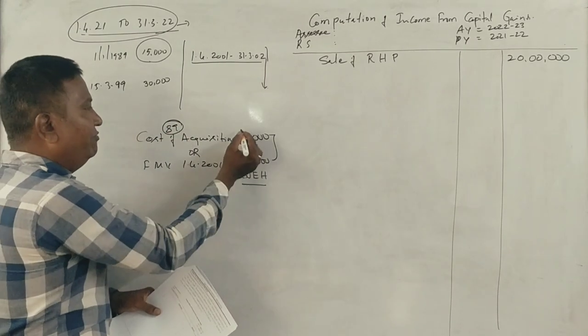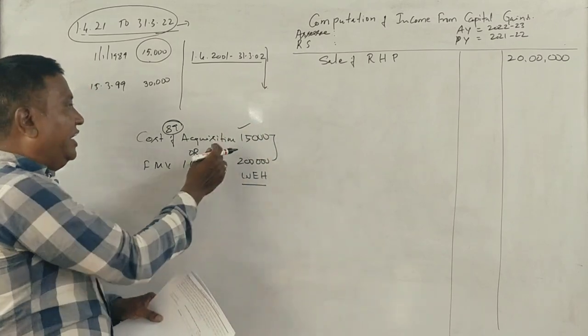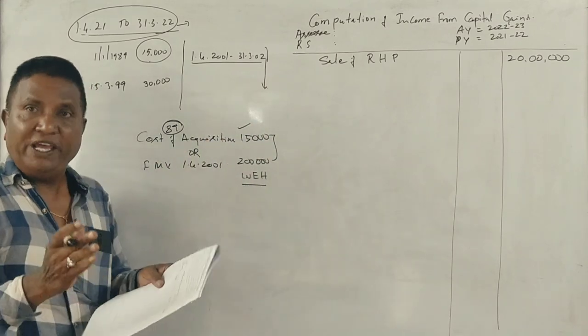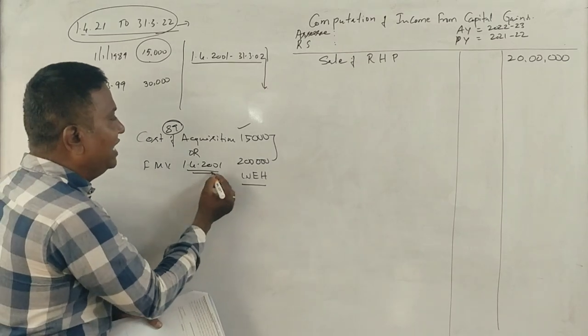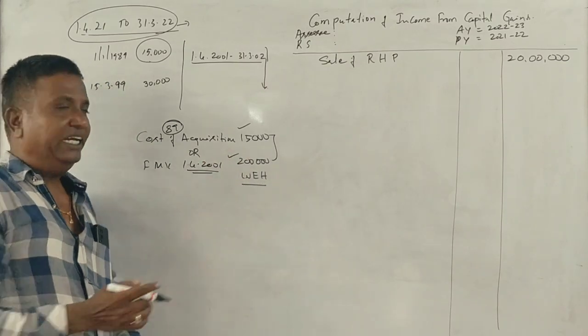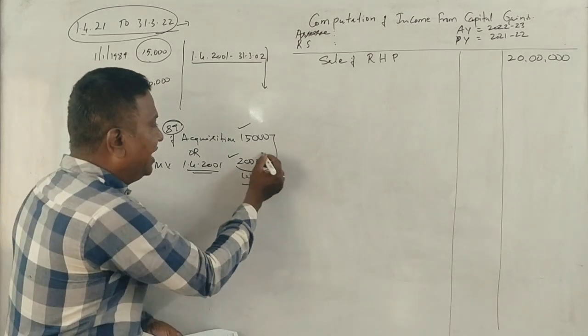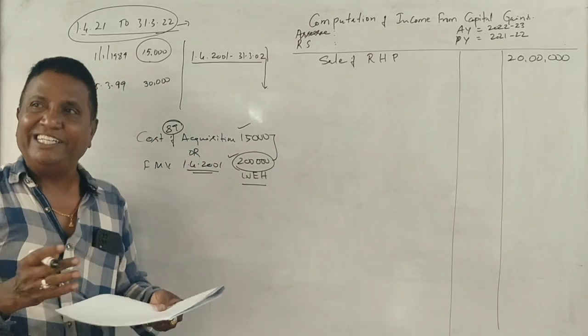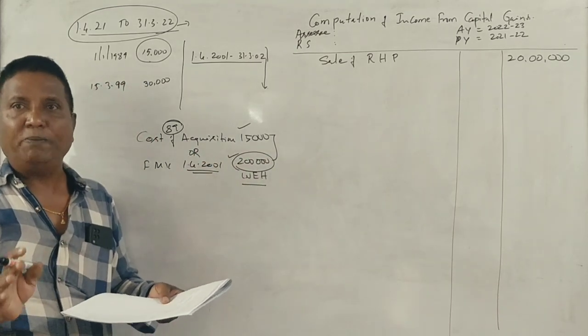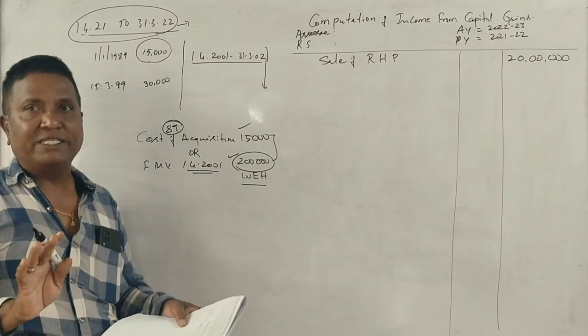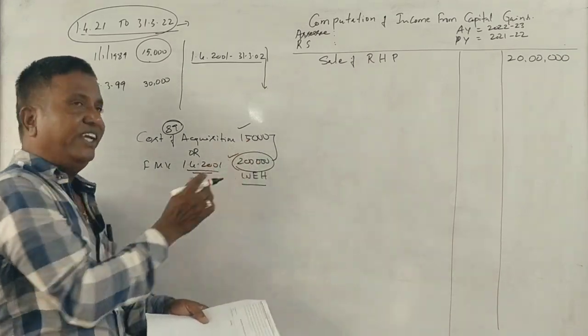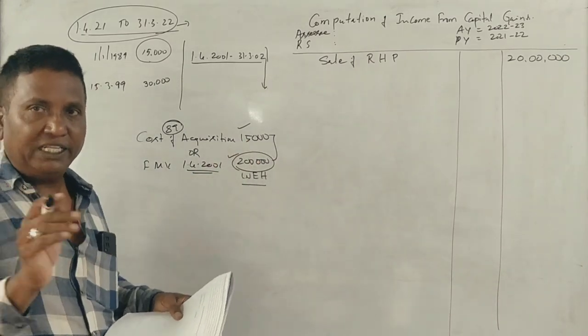This house property, the fair market value as of 2001 is 2 lakh rupees. This becomes the purchase cost, the cost of acquisition of our house property. The purchase cost is 2 lakh rupees. The 15,000 is ignored.